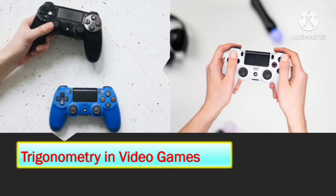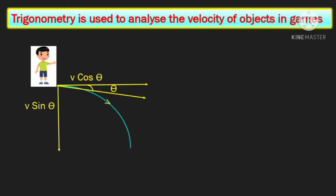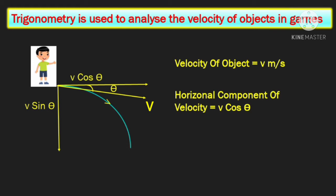Trigonometry takes video gaming to the next level. If a character is moving at a certain velocity v meters per second, while writing the code we need to split this velocity vector into two components: the horizontal component v cos theta and the vertical component v sin theta. By manipulating the values of v cos theta and v sin theta we get the net velocity vector of the object. Knowledge of trigonometry is very much needed while writing the code for these programs.